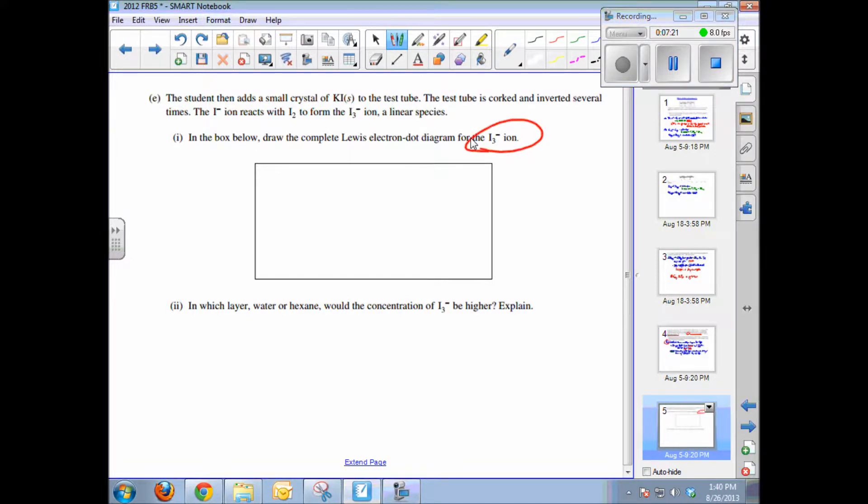Well, to draw any Lewis structure, we always count up the total number of valence electrons. 7 each from 3 iodines, that's 21, plus the 1 minus from the charge on the ion. So the total number of electrons is 22 electrons. And they told us that it was linear. That was a nice hint.